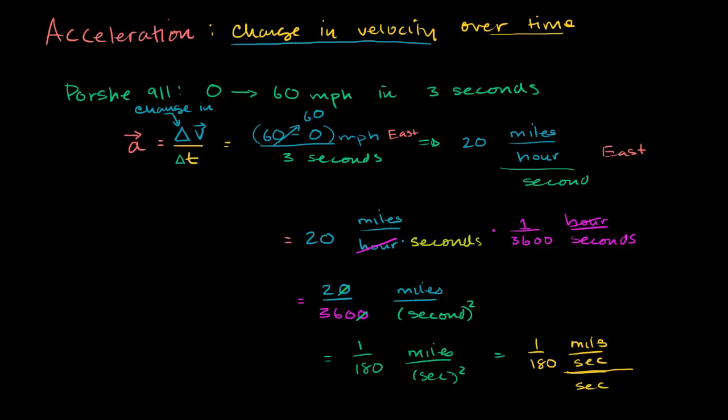And another way to visualize it, if you were to be driving that Porsche and you were to look at the speedometer for that Porsche, and if the acceleration was constant, it's actually not going to be completely constant. And if you looked at the speedometer, let me draw it. So this would be 10, 20, 30, 40, 50, 60.